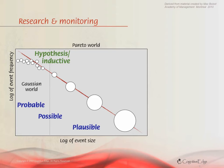However, as I move to the right-hand side, the universe has changed. Hypotheses will blind me, because I won't see the things that fall outside the bounds of my imagination — and that's where the real shocks, the real black swans, are going to come from.